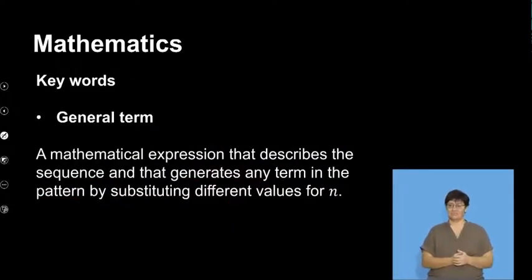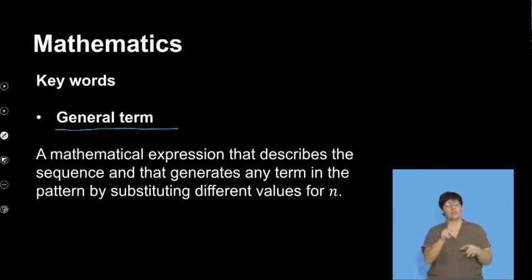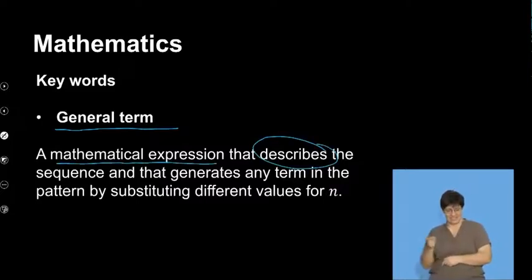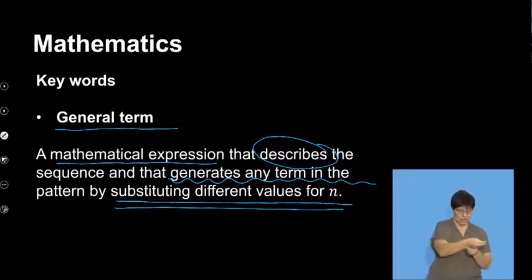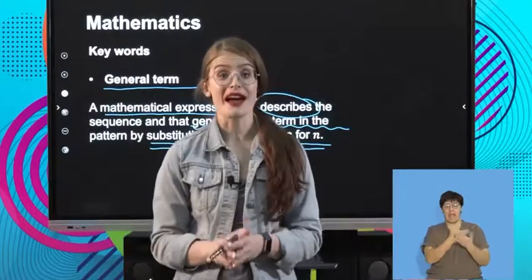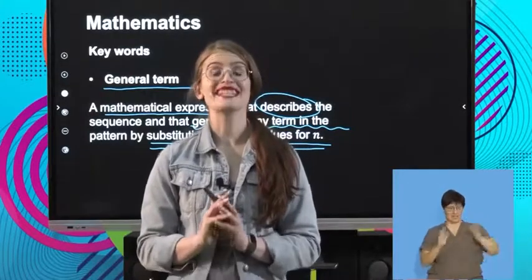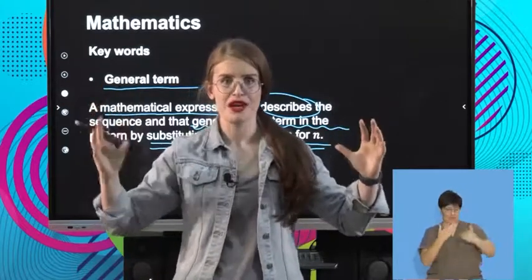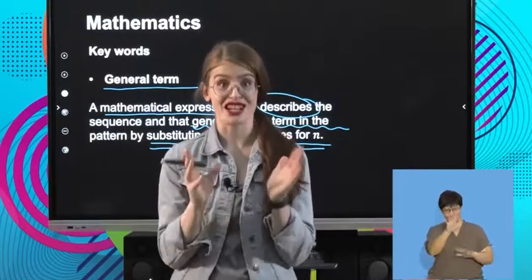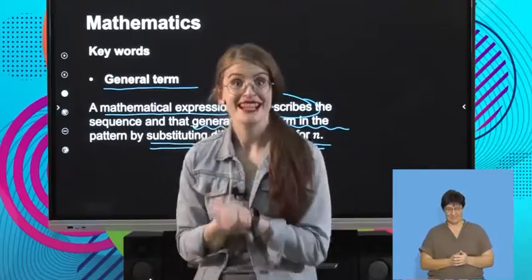Another general concept — the next definition is general term. The general term is a mathematical expression that describes the sequence and can generate any term in the sequence by substituting in different values for n. It essentially means that we can write a mathematical rule for our pattern using T_n and n that can help describe the whole pattern and how it works. We're going to do more examples later to actually illustrate this concept.